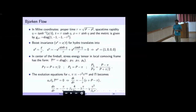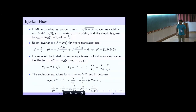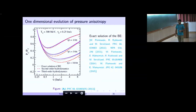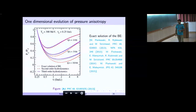P_L/P_T is the pressure anisotropy — if it equals one, the system is isotropic. Going to equilibrium, π → 0, so P_L/P_T → 1. One can numerically solve the Boltzmann equation in the relaxation time approximation and compare results with second and third order. We find that third-order hydro does better compared to second order — that is what I mean by improved accuracy of third order over second order.